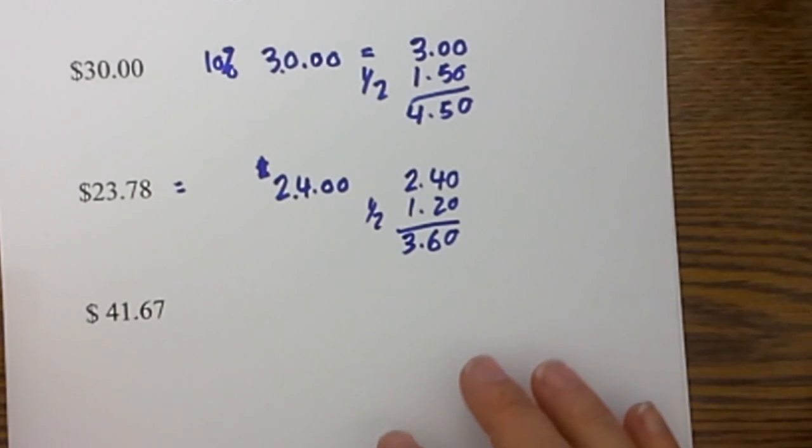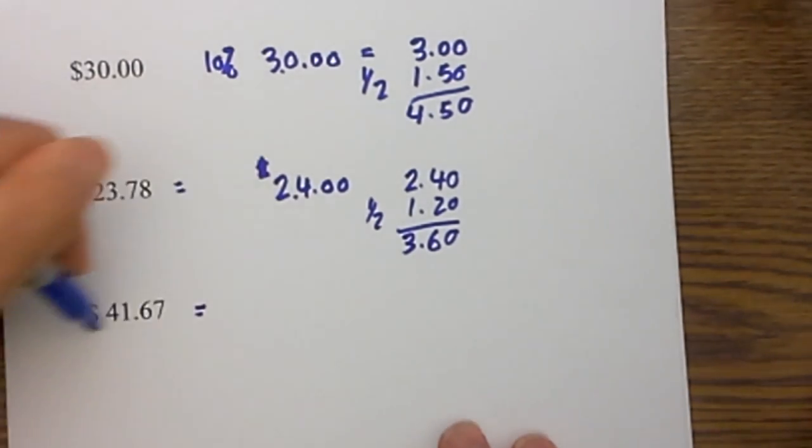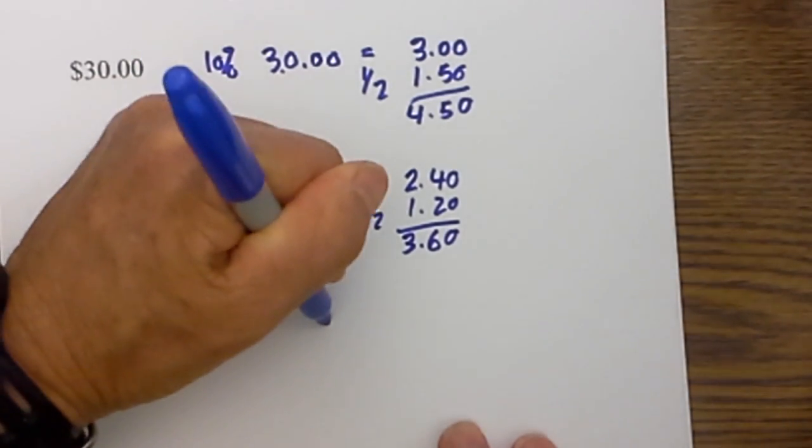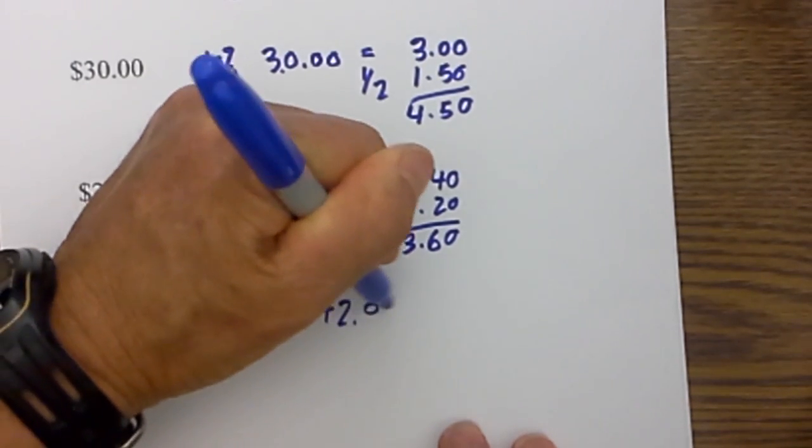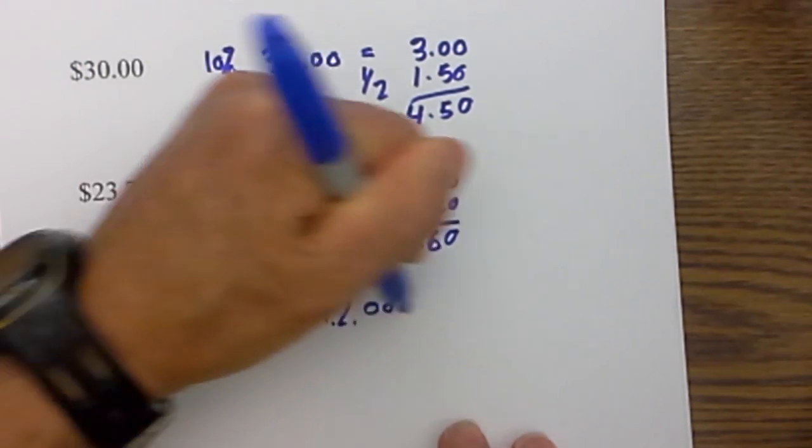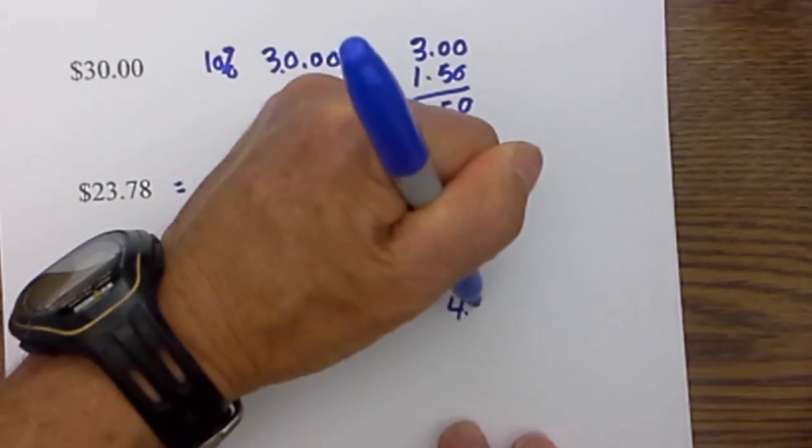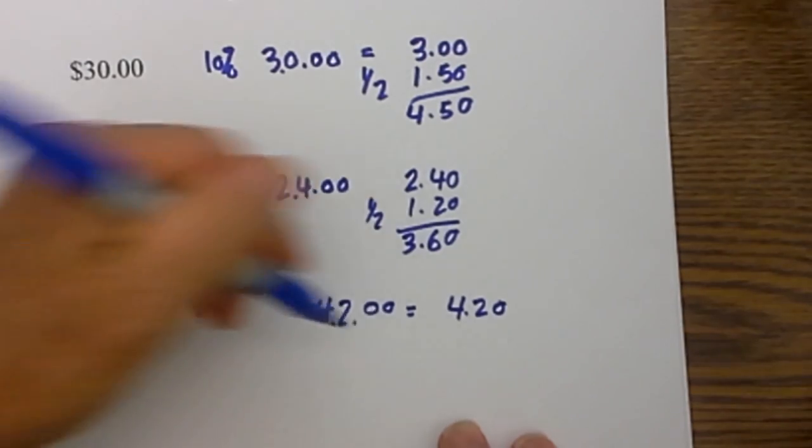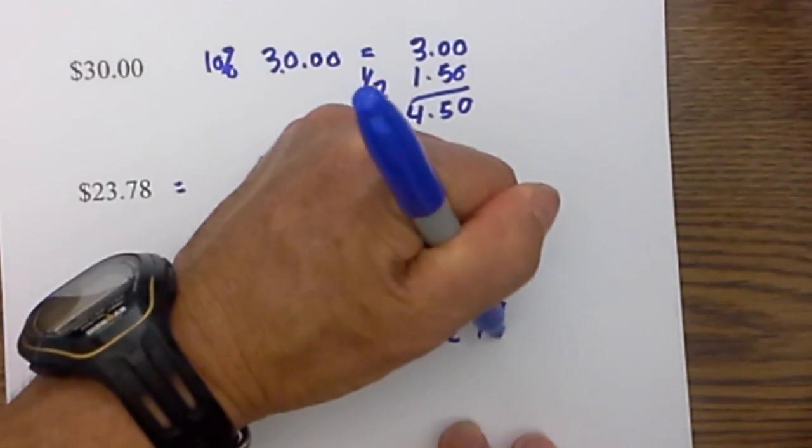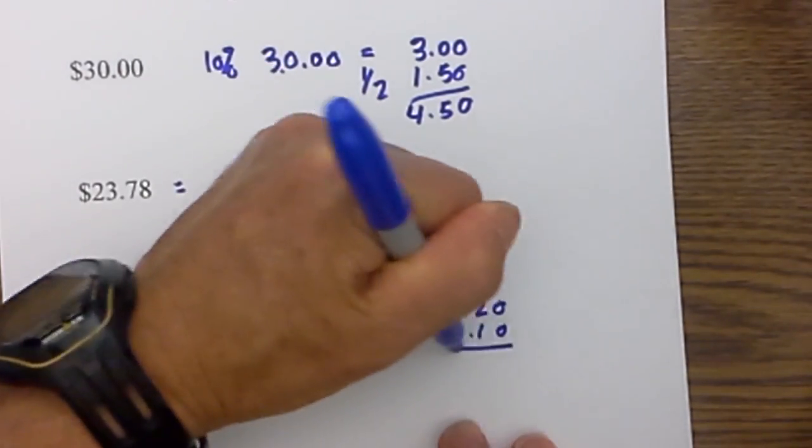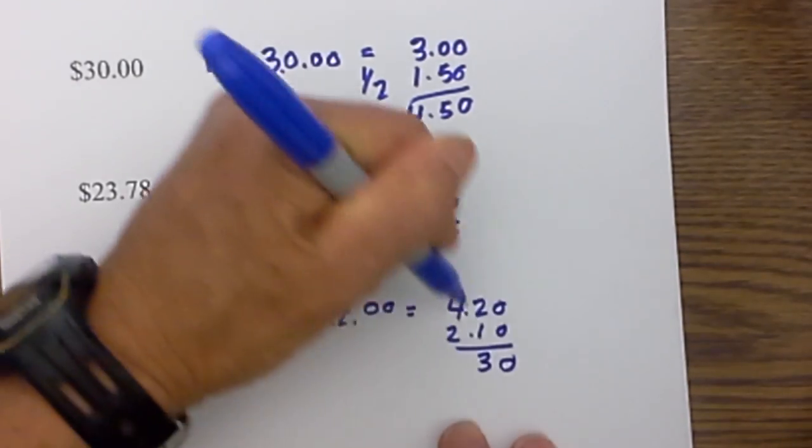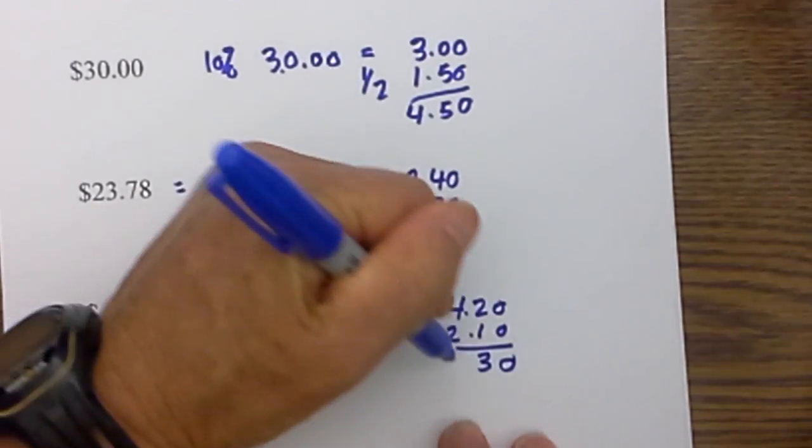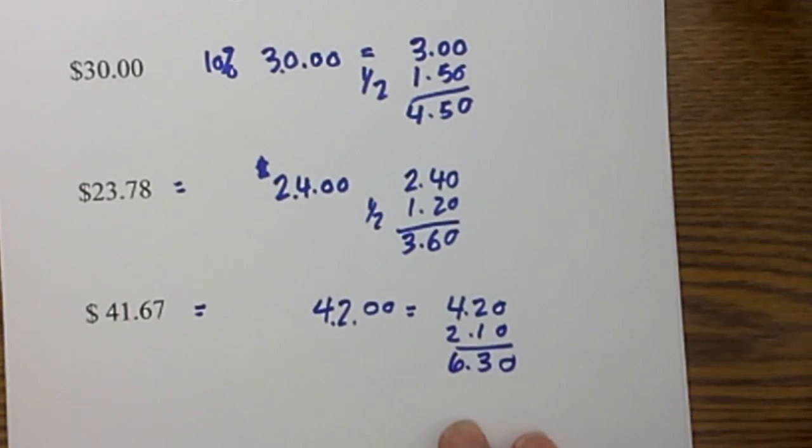I will do a couple more of these on how I round it. I have a bill of $41.67 and I round that to $42.00. I move the decimal place to the left so that is $4.20. Take one half of that which is $2.10 and then I add and when I add I get $6.30.